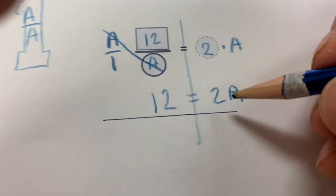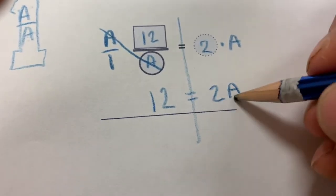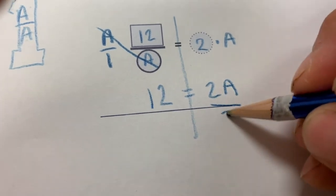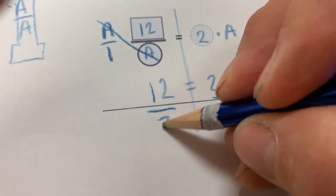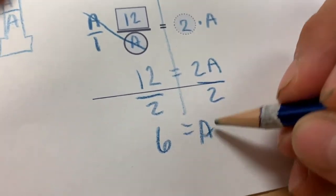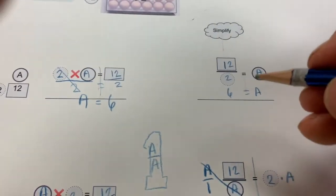Now, all we have to do is solve it. We know how to do that. This is twice as big as it needs to be. Divide by 2. So 6 equals A, all four times.